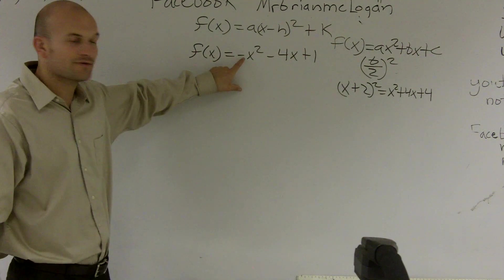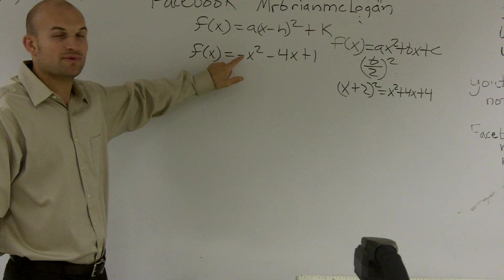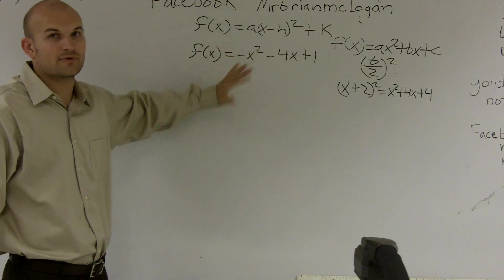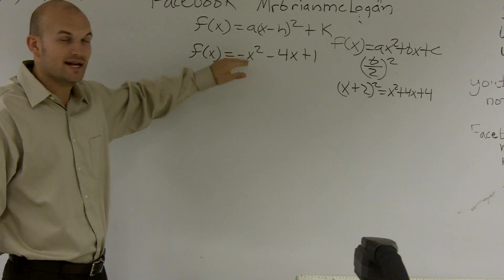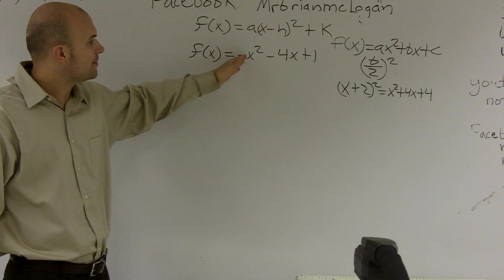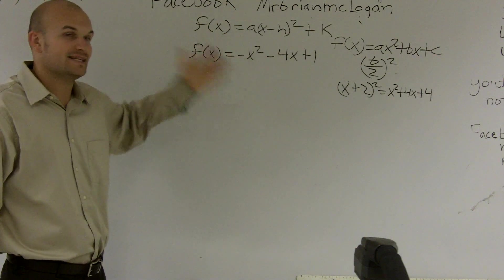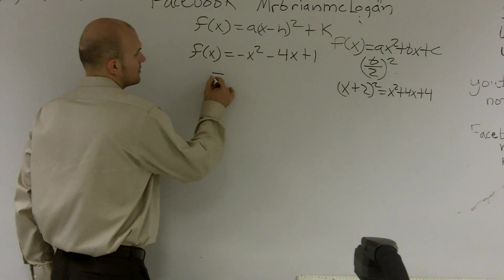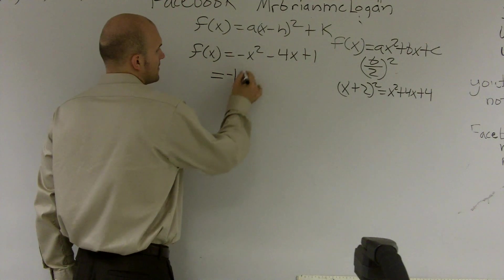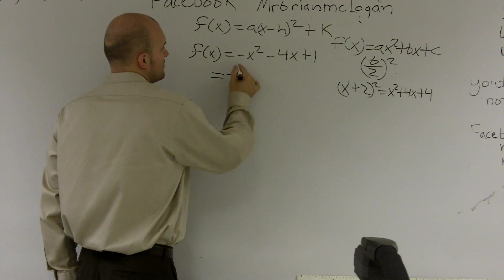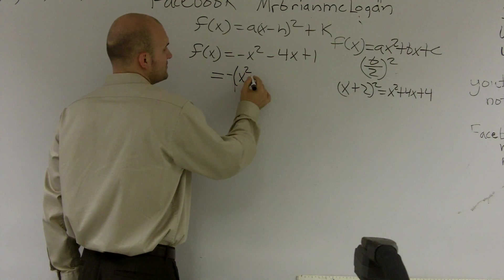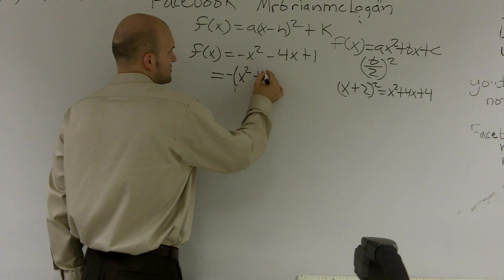So how do we complete the square? The first thing we need to do is get rid of this negative 1. Any time you have a negative 1, a 2, a 3, any real number that is in front of our x squared, we need to factor it out. So I'm going to factor this out. I don't need to write a negative 1. I'll factor it out. So I'm left with x squared plus 4x.